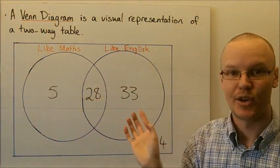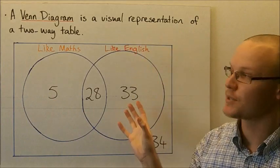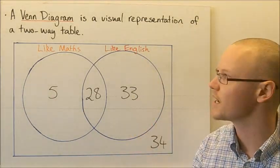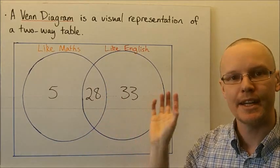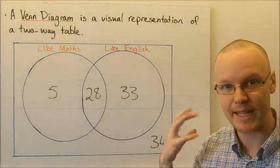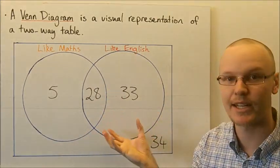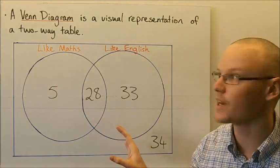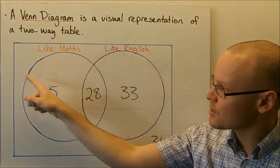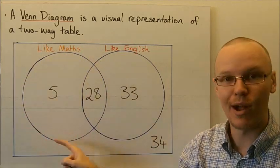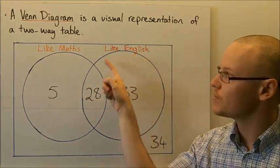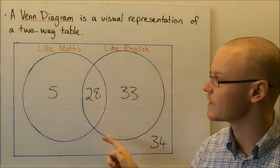A Venn diagram is a visual representation of the data we had in the two-way table. It doesn't show the totals — you need to calculate those from the Venn diagram. Here we have two circles: one circle represents the students who like Maths, and the other represents the students who like English.